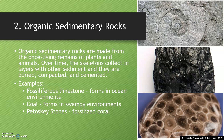The second type of sedimentary rocks is organic. Organic sedimentary rocks are made from the once-living remains of plants and animals. Over time, the skeletons collect in layers with other sediment, and they're buried, compacted, and cemented together. Sometimes you can see fossils in the rocks, and sometimes you can't. An example is fossiliferous limestone, which forms in ocean environments, so the fossils you'll see would be sea creatures.